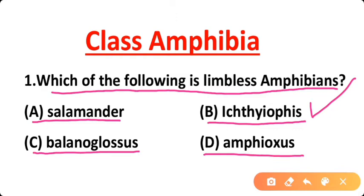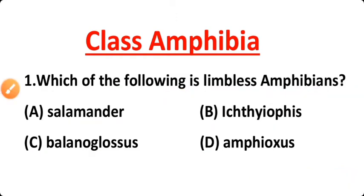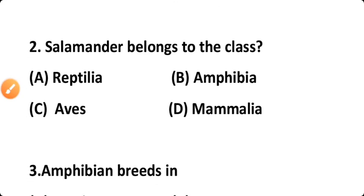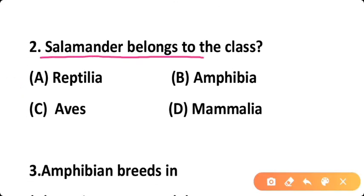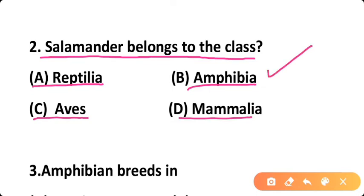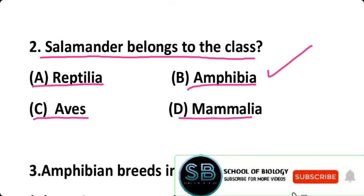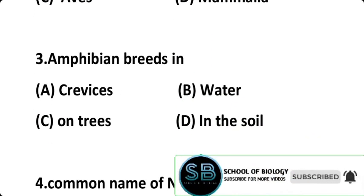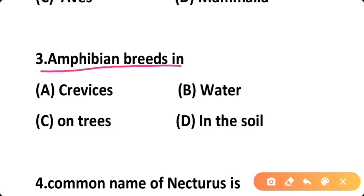Question number two: Salamander belongs to which class? Option A: Reptilia, Option B: Amphibia, Option C: Aves, Option D: Mammalia. The correct answer is Option B — Salamander belongs to Class Amphibia and order Urodella.